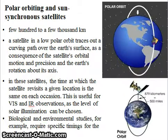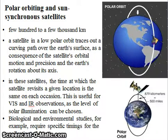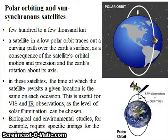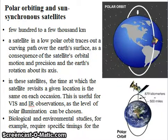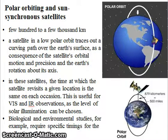Coming to polar orbiting and sun-synchronous satellites, the orbit altitude of these polar orbiting satellites — unlike geostationary satellites which are at a higher altitude of around 36,000 km — is placed a few hundred to a few thousand kilometers above, in the range of around 600 to 2,000 kilometers. As the name indicates, these satellites orbit the Earth from pole to pole, from north pole to south pole in the descending mode and from south to north in the ascending mode.